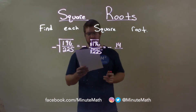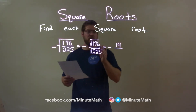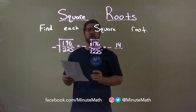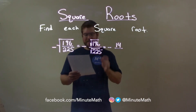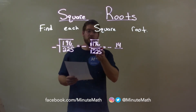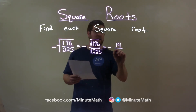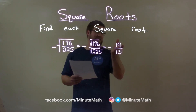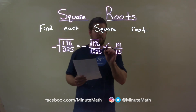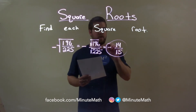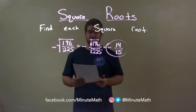Now, the denominator. Same question: what number times itself is 225? And that number is 15. So the square root of 225 is 15. We cannot simplify this fraction anymore, and so our final answer is negative 14 over 15.